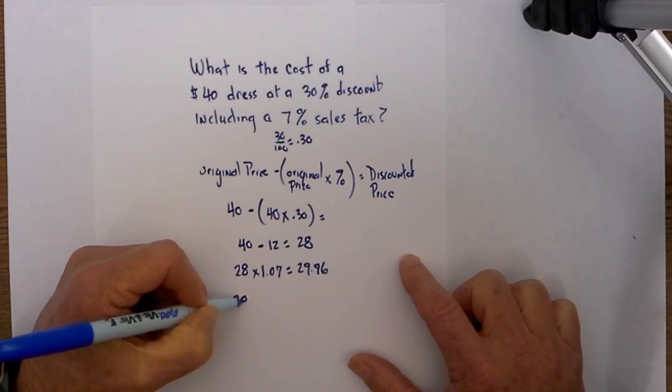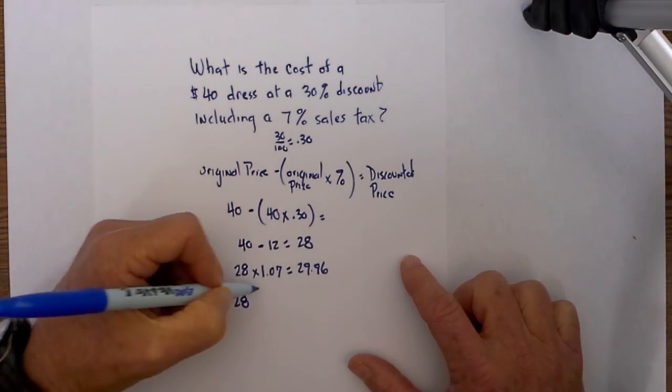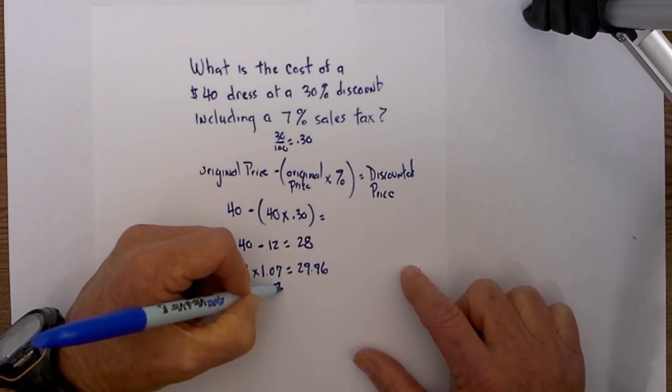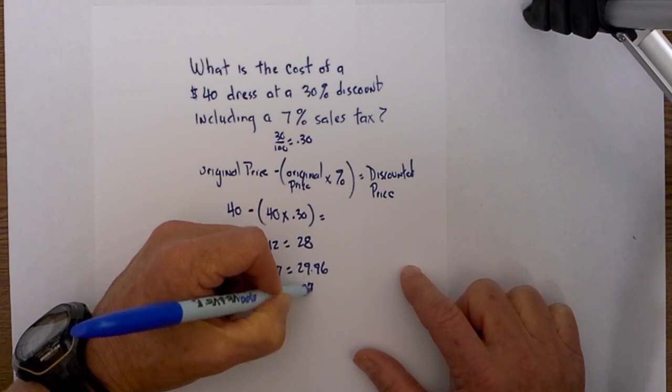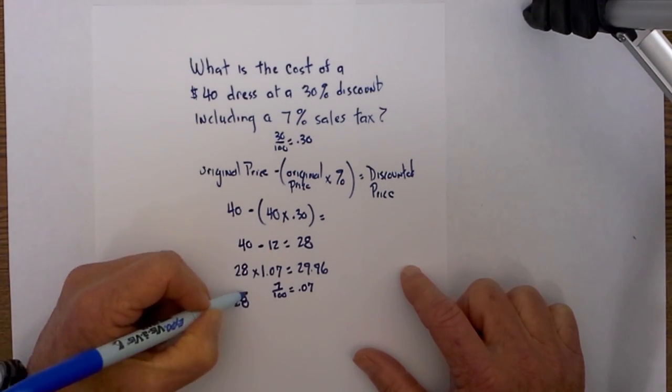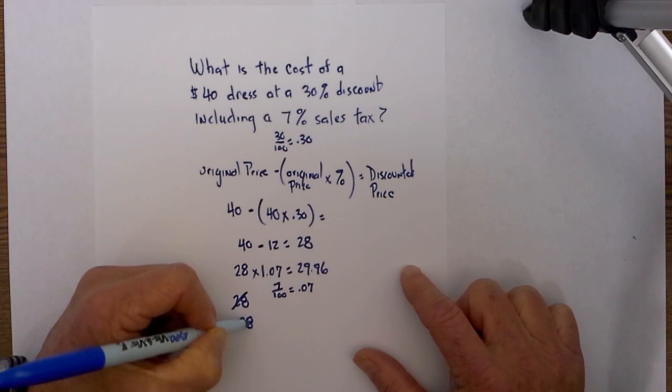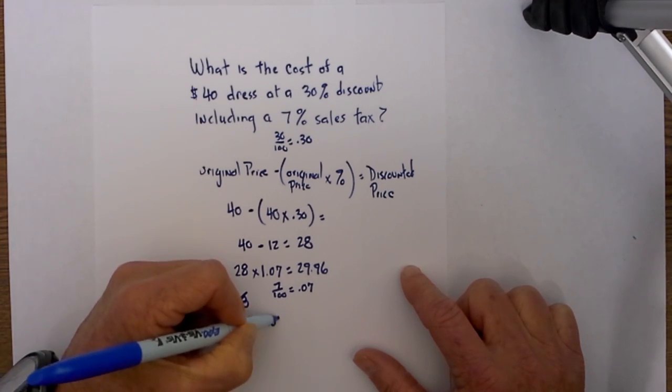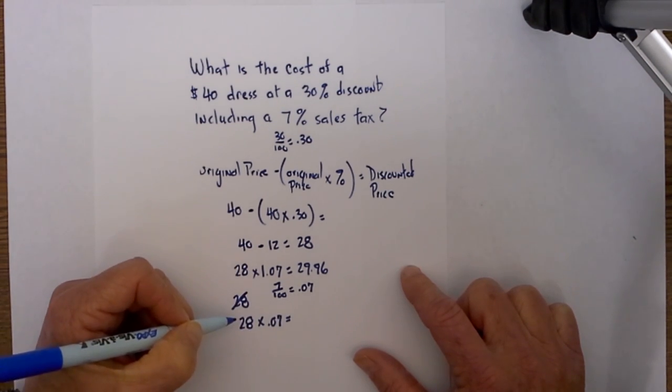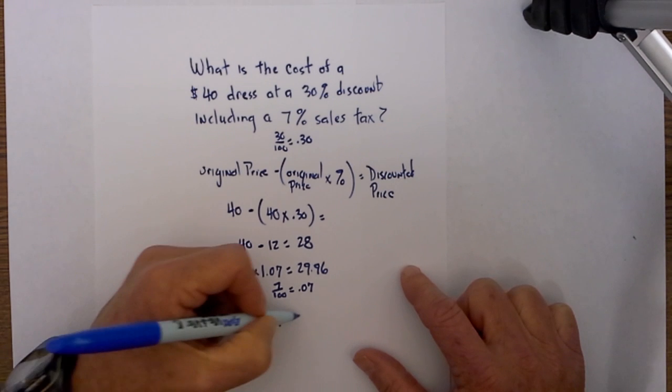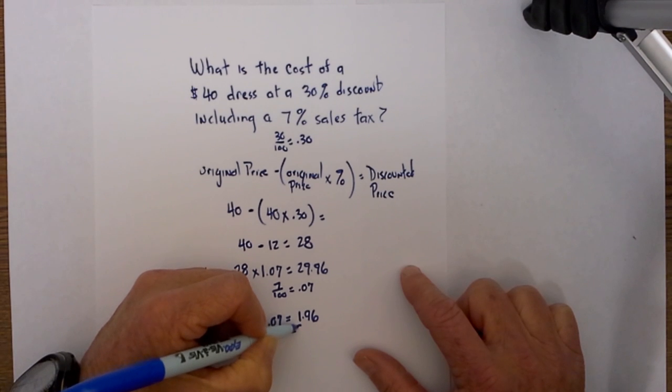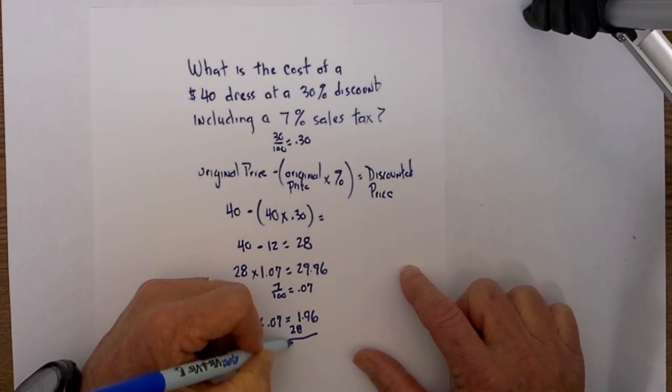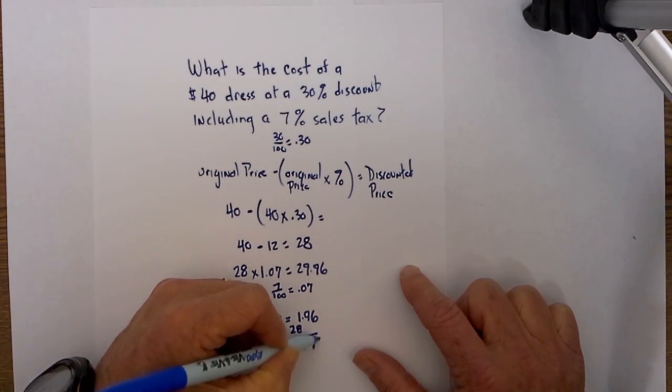If I take 28, and again if I take 7%, then 7 divided by 100 equals 0.07. I can take 28 times 0.07 because that is how much the sales tax will be. When I multiply that, that is 1.96, and then if I add that to 28, I get 29.96.